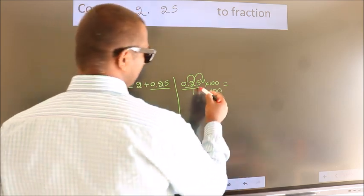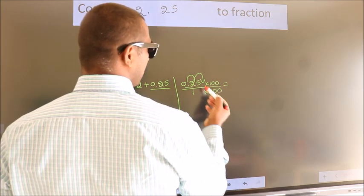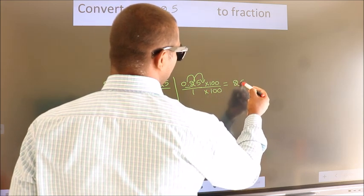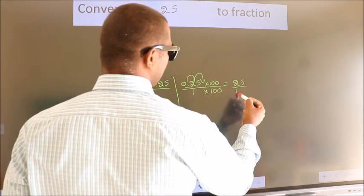Next, 0.25 into 100 is 25. 1 into 100 is 100.